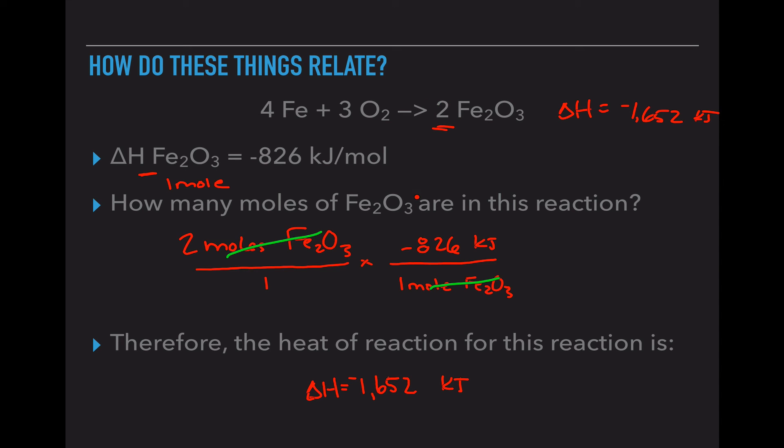Now, if this was balanced differently, our number would be a different number. If this was all multiplied by 2, 8, 6, and 4, this would also get multiplied by 2 again. So it is based on the individual chemical formulas written next to it.